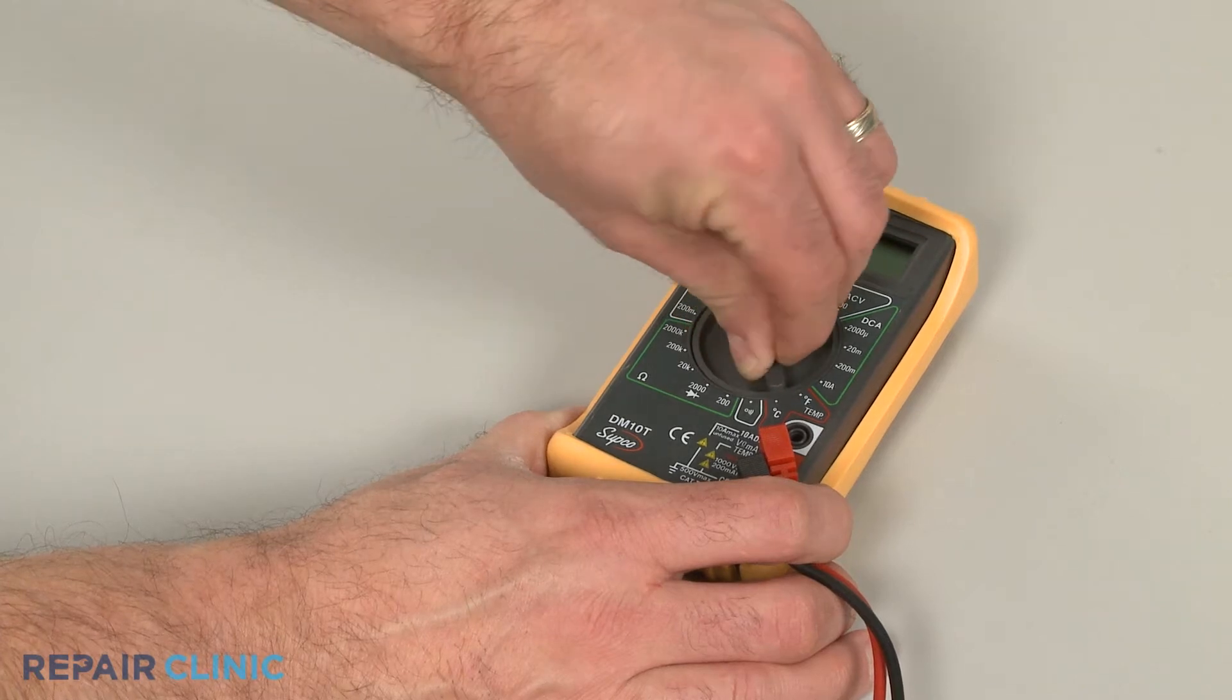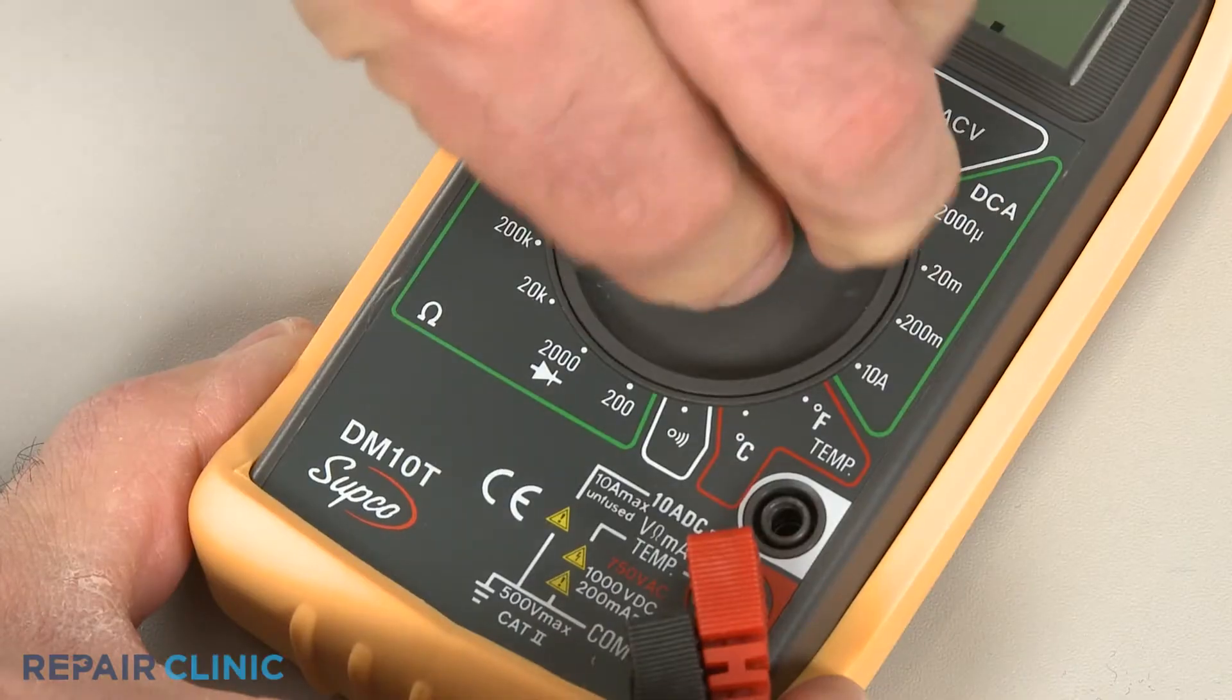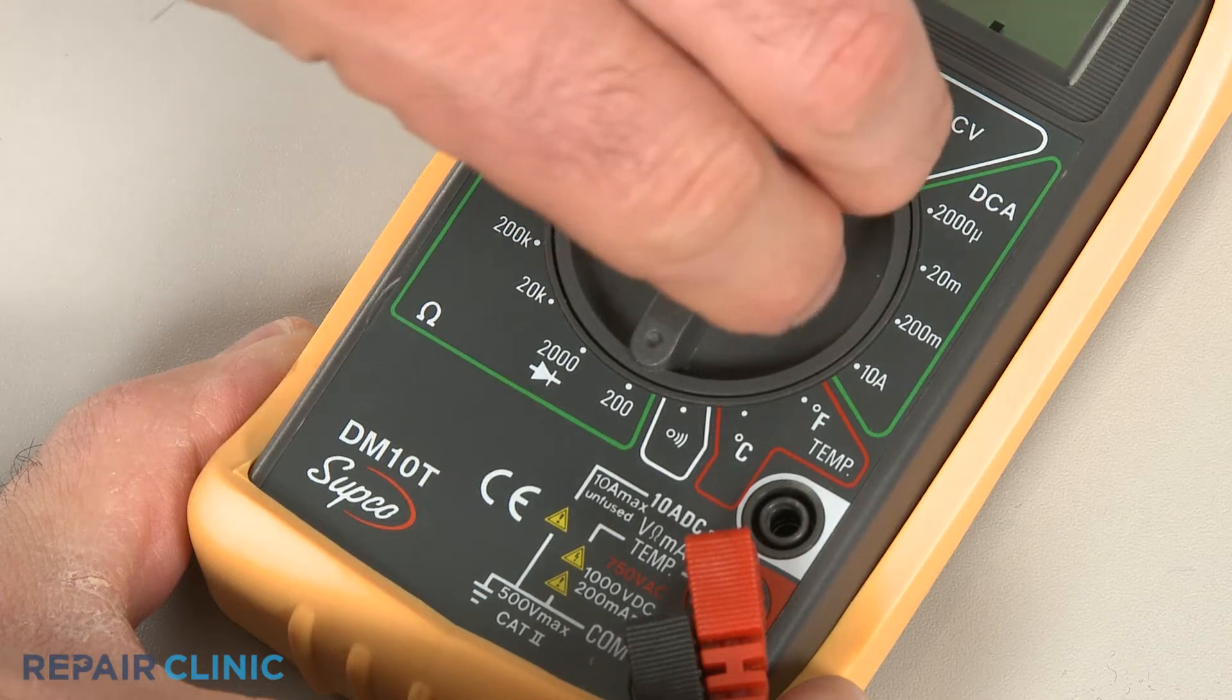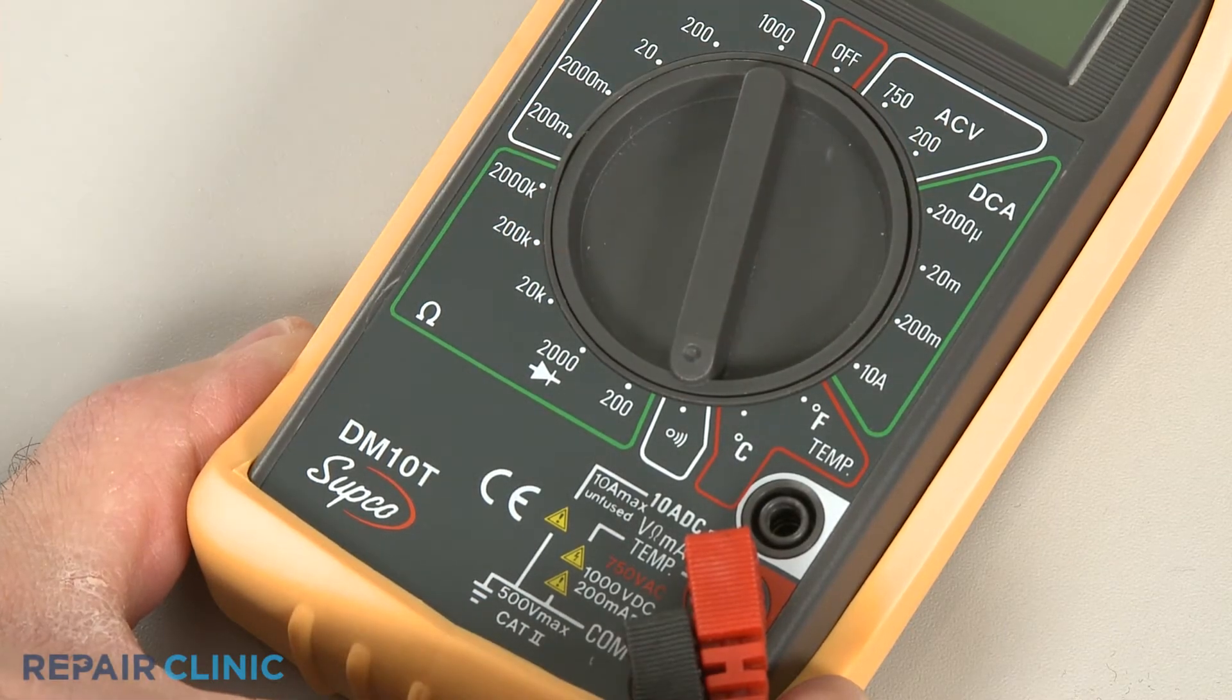When using a digital model, again rotate the dial to the lowest setting for ohms of resistance, or resistance with tone if your meter has this option.